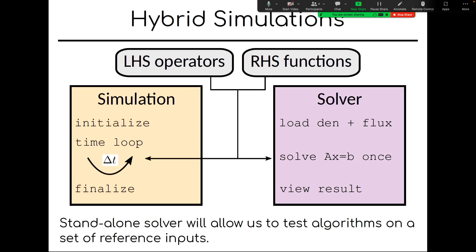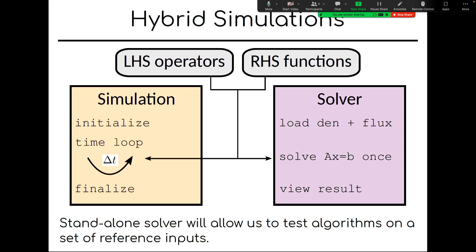So the collisionality of the ionospheric E region leads to unique plasma instabilities. The Farley-Buneman and gradient drift instabilities couple energy across scales. Hybrid PIC simulation allows us to focus on the ion behavior. And I am very actively working on this new Petsy-first implementation of the hybrid model. Okay, so thanks a lot.